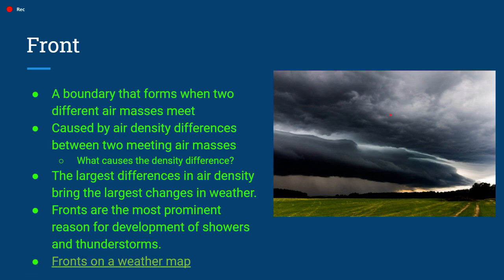The masses that meet typically lead to the formation of a front. A front is caused by air density differences between two meeting air masses. If you have a warm air mass and a cold air mass coming together, that can create the front because warm air is less dense, and when it meets the cooler, denser air, that leads to the formation of the front. This has a lot to do with thermal expansion — as air gets warmer it expands, and as air gets cooler it contracts and gets denser. The largest differences in air density lead to the largest changes in weather.